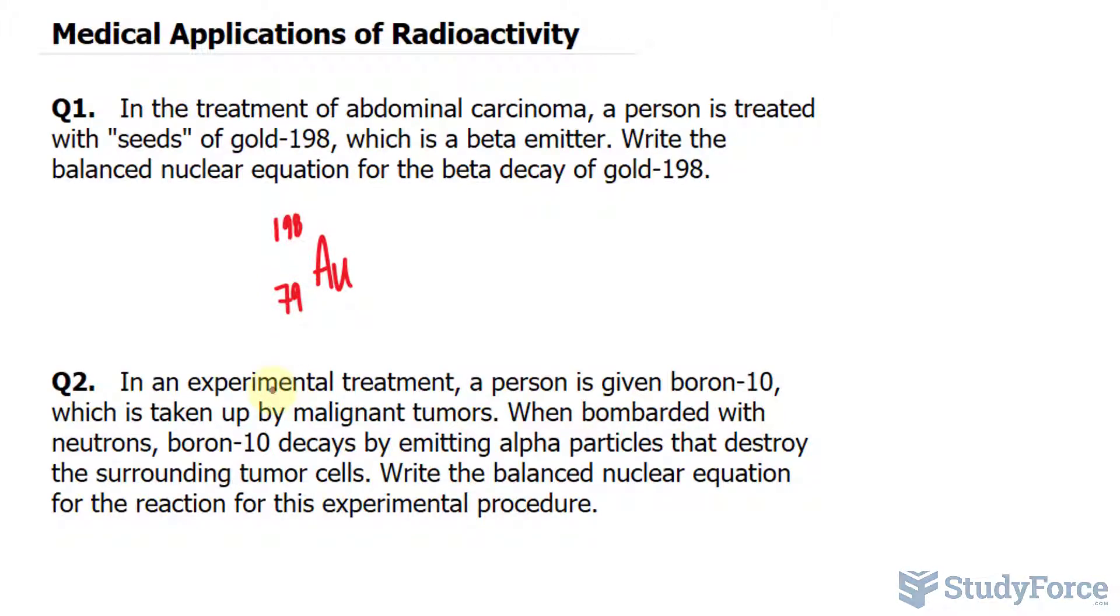Now it's a beta emitter, which means that it will be releasing beta particles. A beta particle is represented as an electron with a mass of zero and a proton count of negative one. When a nucleus emits a beta particle, one of its neutrons changes into a proton,